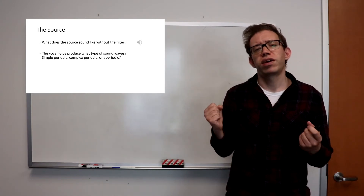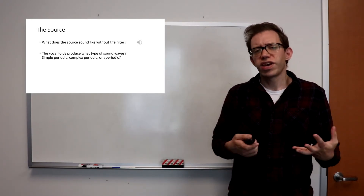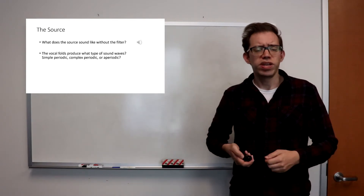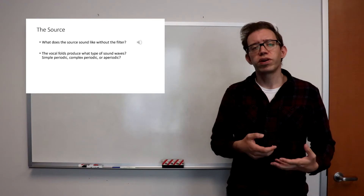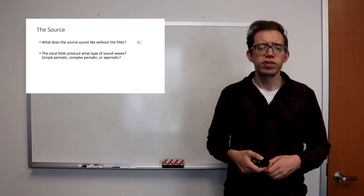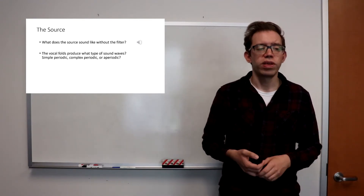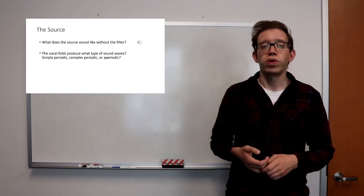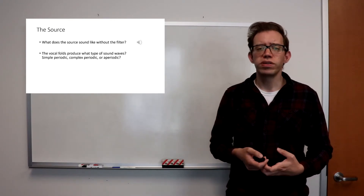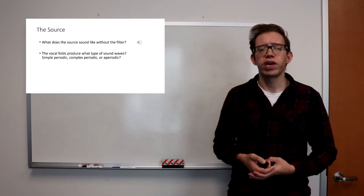For humans, the unfiltered vocal folds would actually sound something like a buzz noise. So what is that exactly? We'll talk about the acoustic characteristics of that buzzing produced by the vocal folds. Think about what we discussed last time — aperiodic noise, and simple periodic and complex periodic sound. What type is produced by the vocal folds?